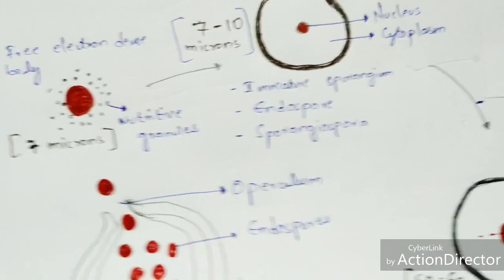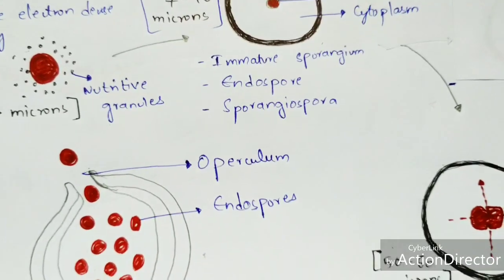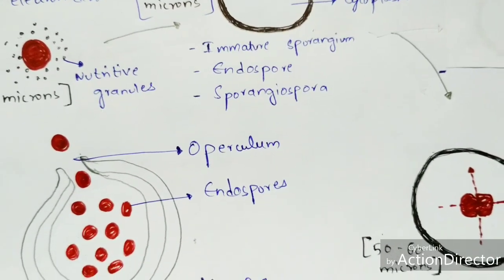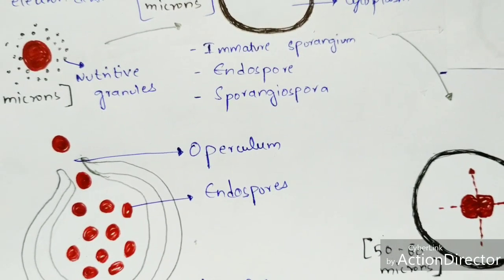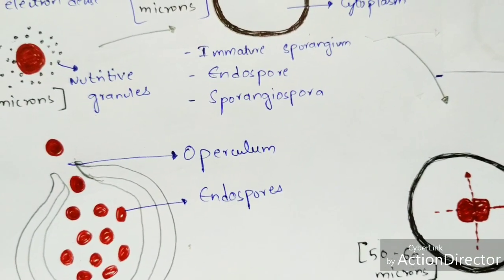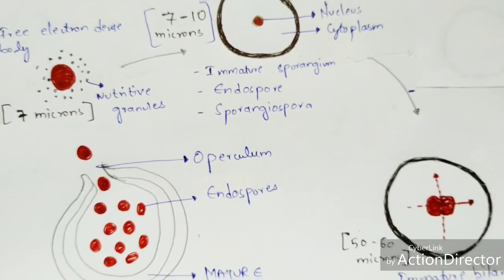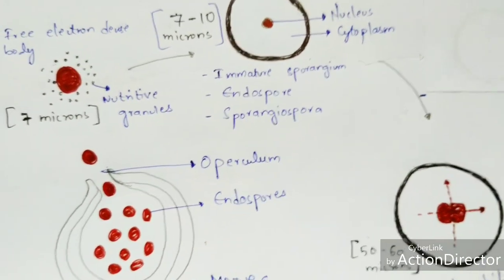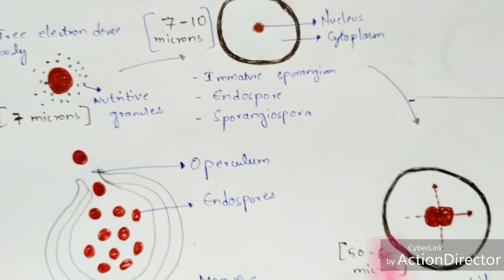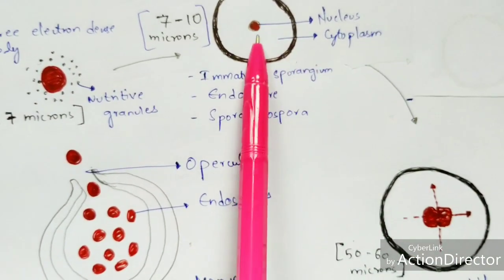The free electron dense bodies then re-enter the next stage as immature sporangia, with a size of 7 to 10 microns, and the entire life cycle repeats.